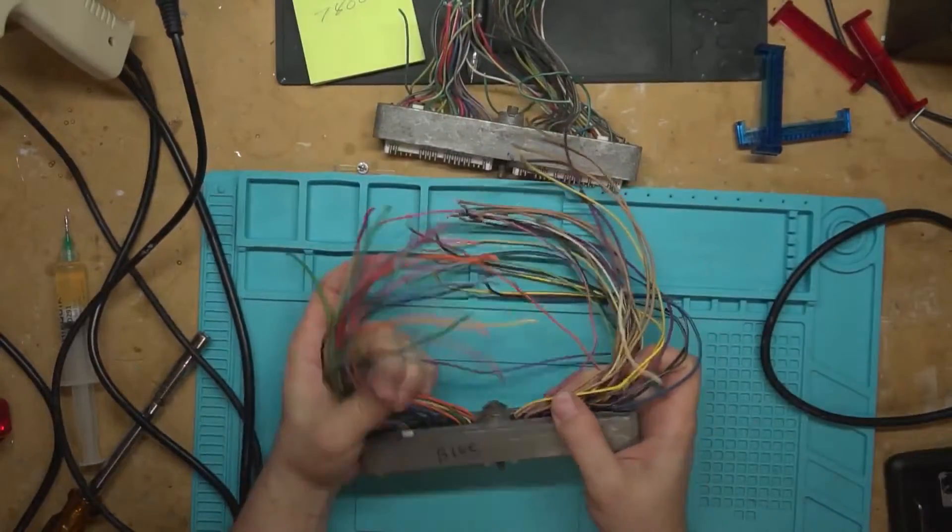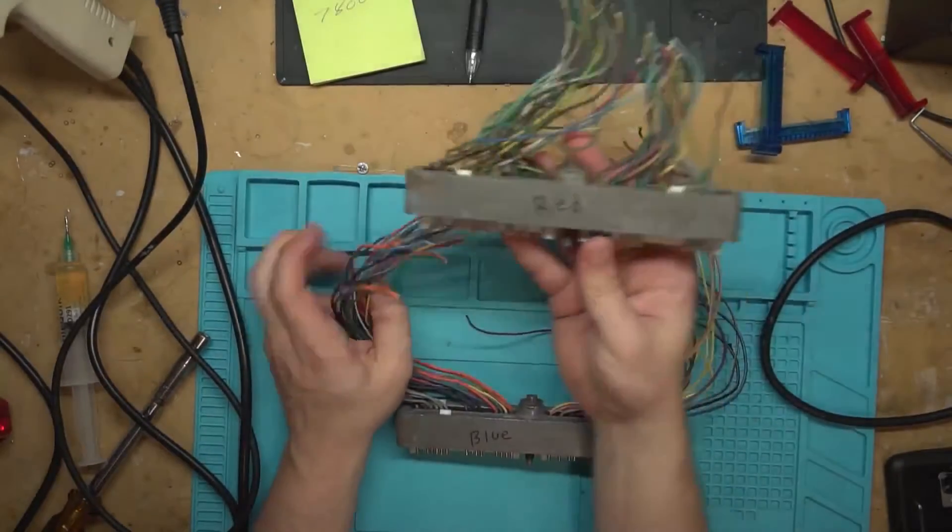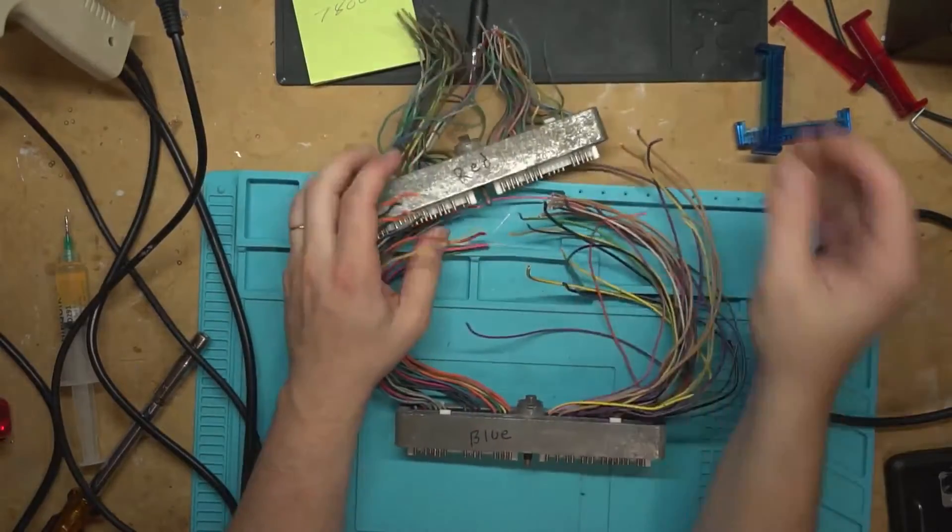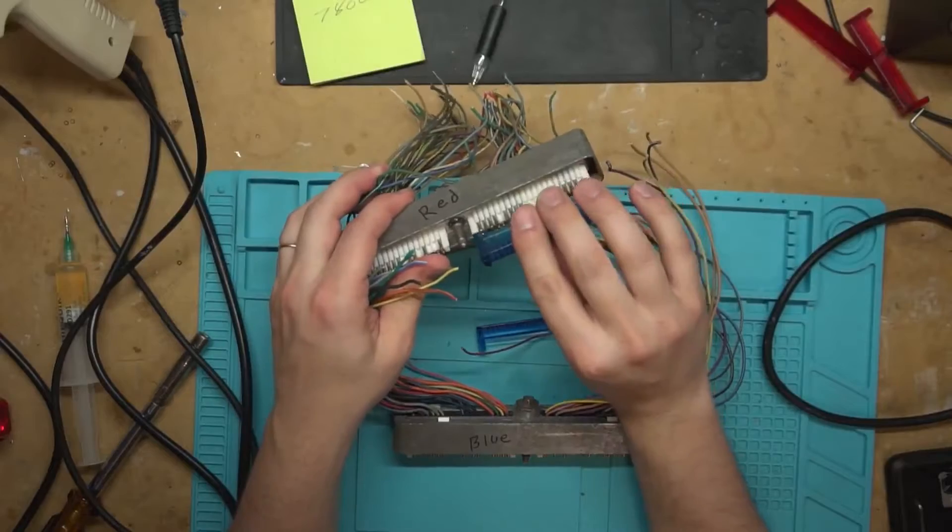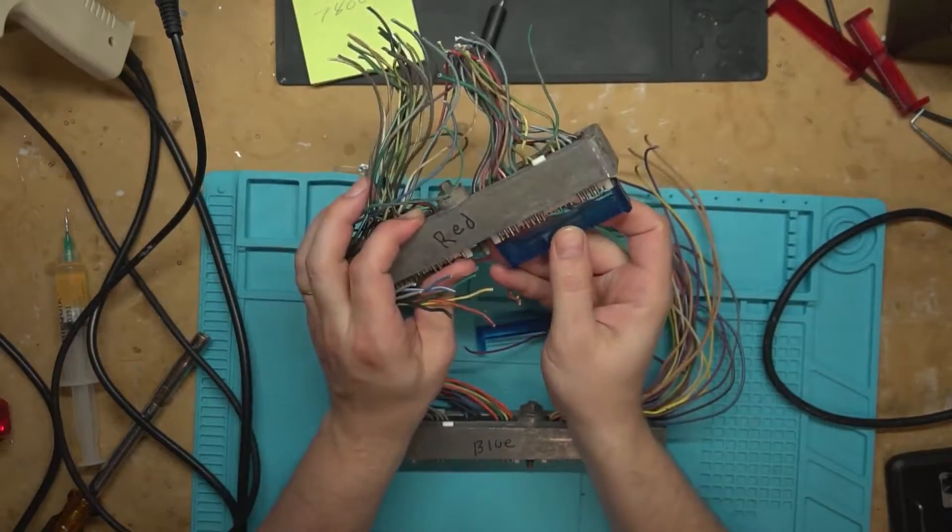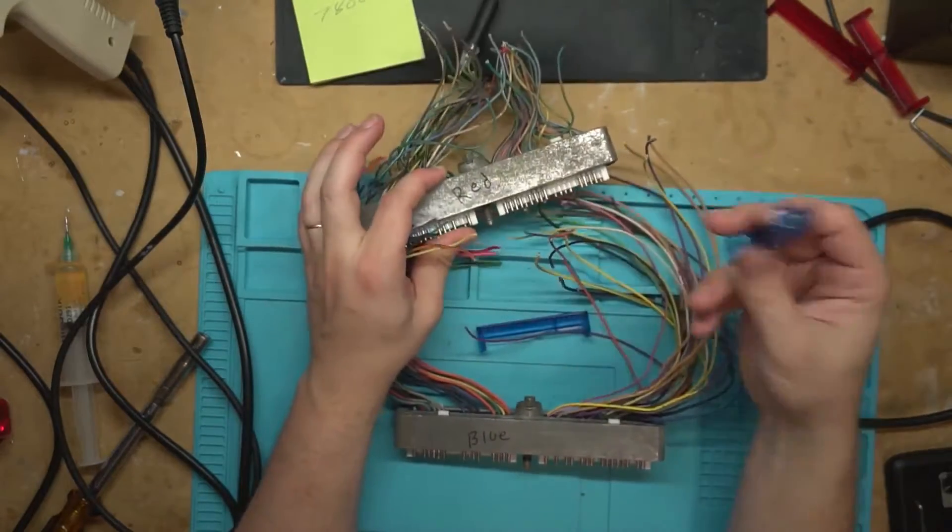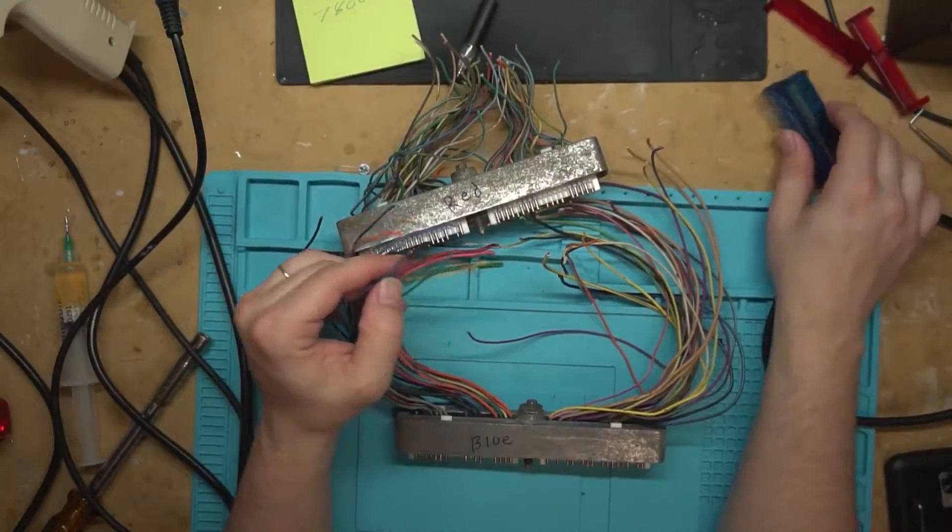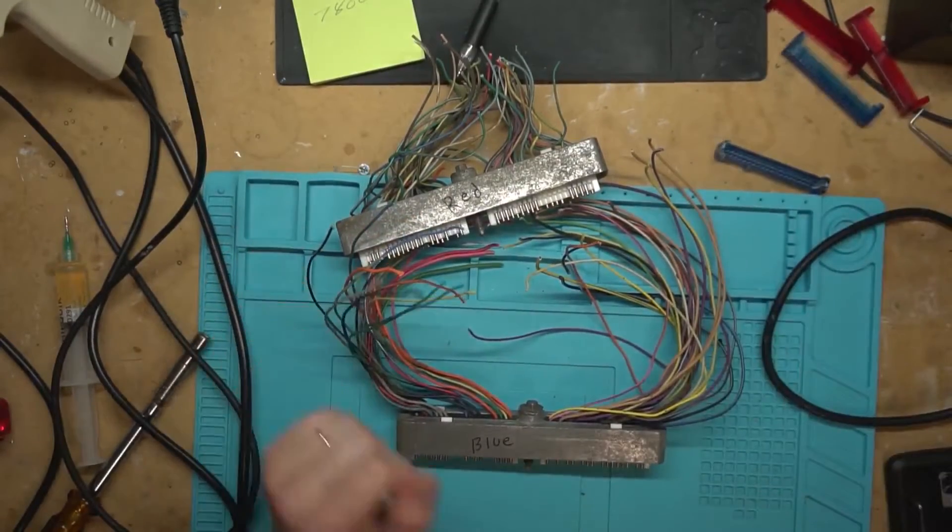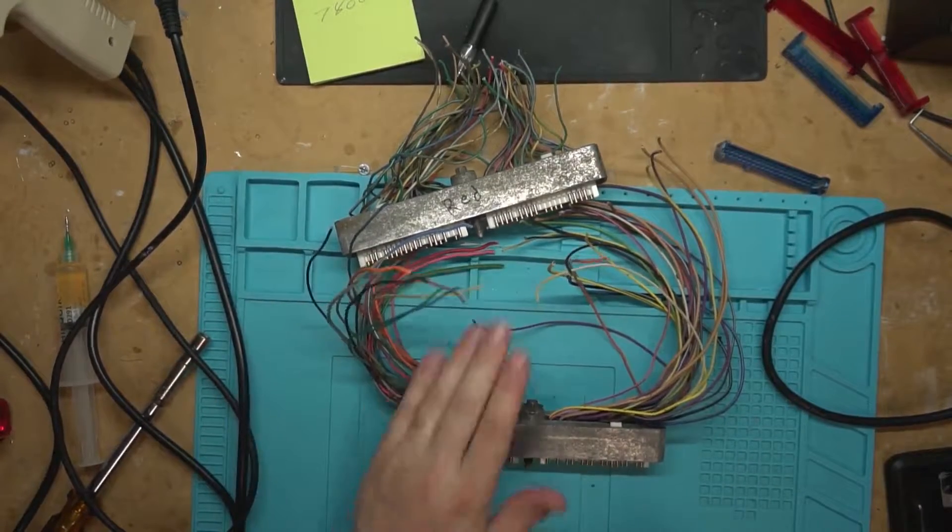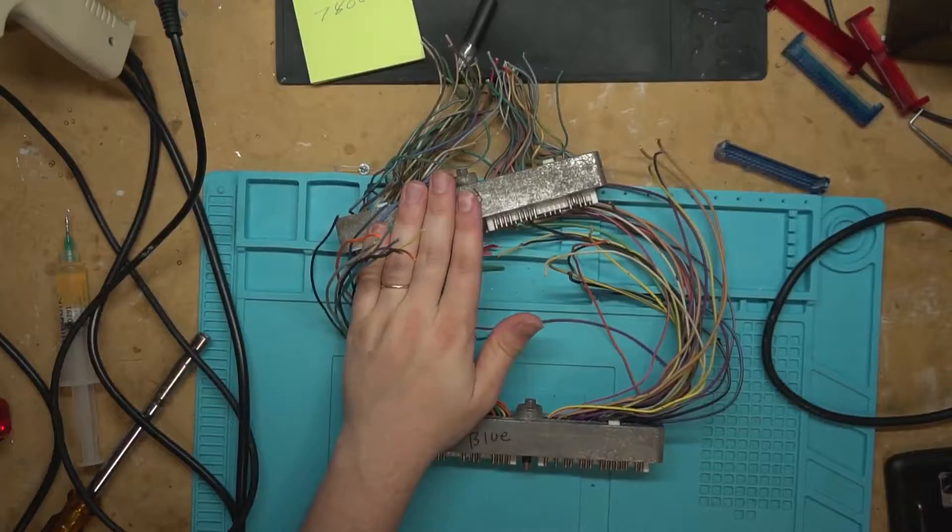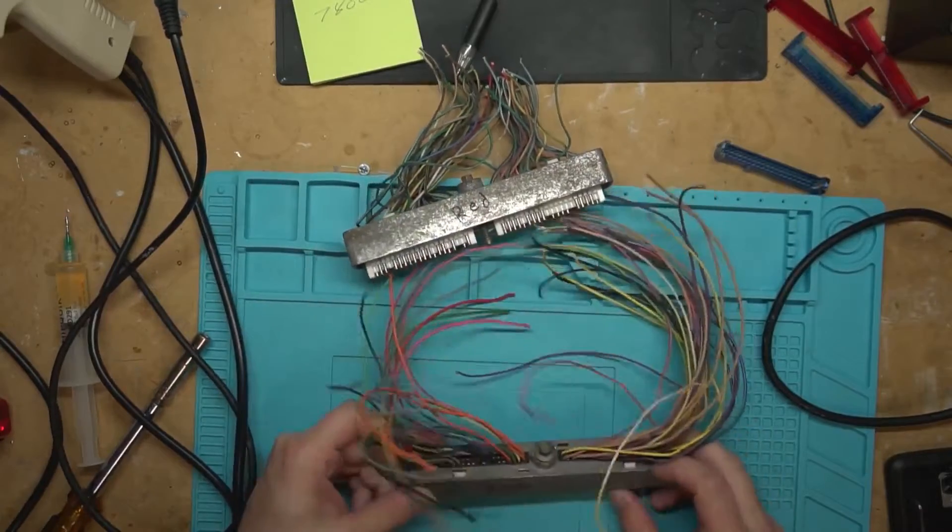We'll start with the blue connector. I went ahead and wrote on top the blue versus red because you can't actually stick this blue one on the red one. So you want to make sure that you do annotate which one's which because you can put them back together wrong or just take them apart one at a time. And we're going to start with blue because that's the order that that list goes in. It's connector one, connector two. So we'll just start here, and we'll start at pin one.